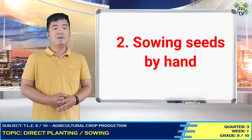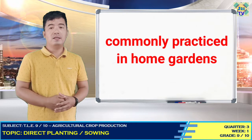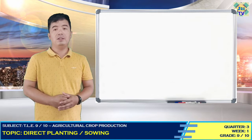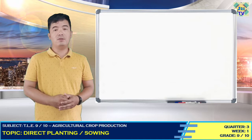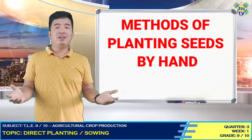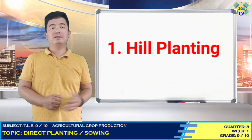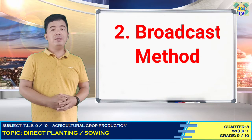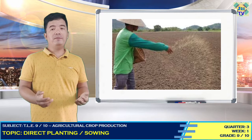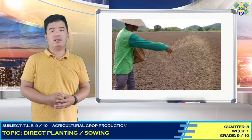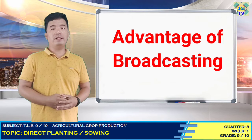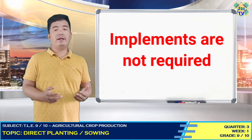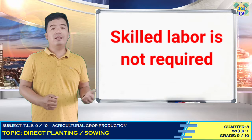Sowing seeds by hand is commonly practiced by home gardeners and in not too wide fields. The seeds should be distributed uniformly in the furrow and covered immediately to prevent loss of moisture and bring the seed into close contact with the soil. Methods of planting seeds by hand: number one, hill planting — commonly done by placing three to four seeds per hill. Number two, broadcast method — scattering seeds uniformly by hand over a well-prepared field and then covering them with soil using a light implement. Advantages: quicker and cheaper method; implements are not required; skilled labor is not required.